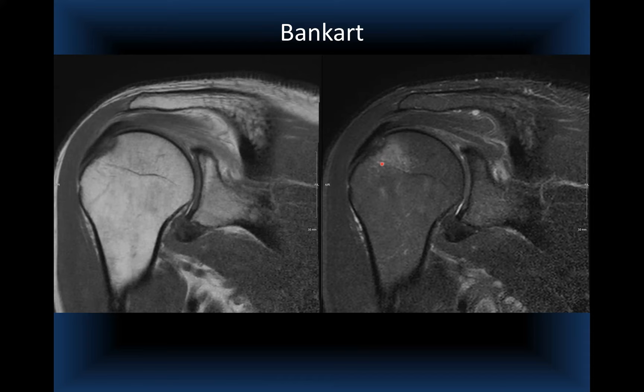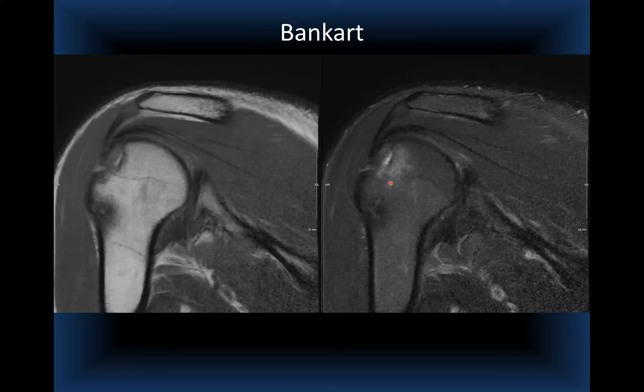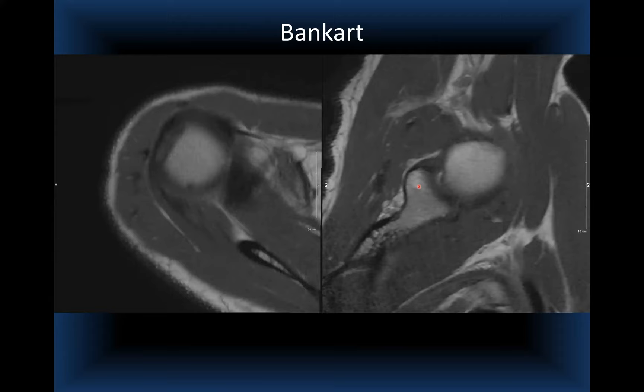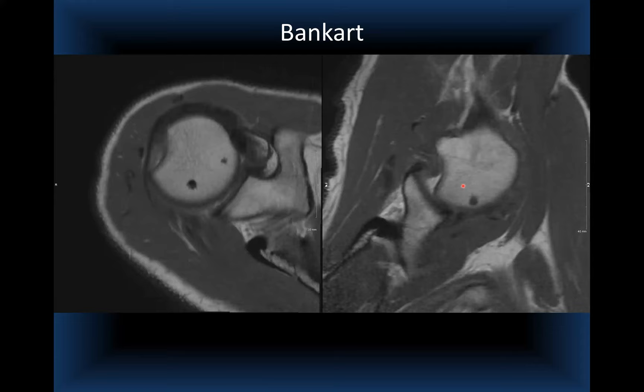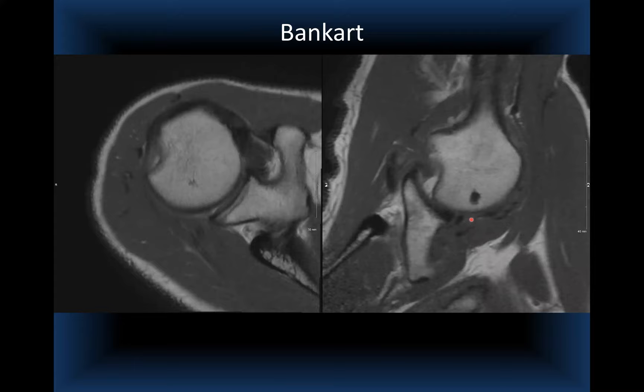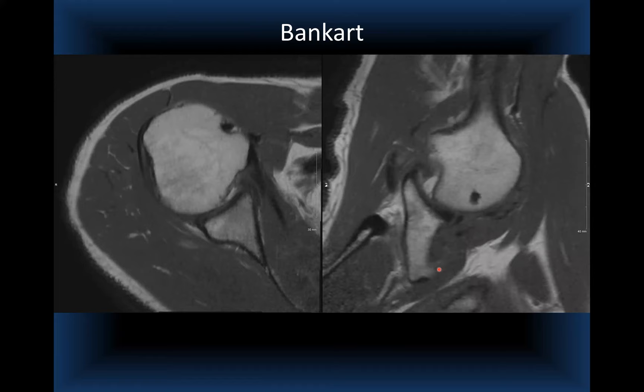Because I was watching the images being acquired, I called the technologist and requested an additional ABER sequence. On ABER, you can see how closely the Hill-Sachs lesion approaches the anterior glenoid — engagement — and the detached labrum and stripped periosteum are visible. This case was diagnosed on both routine orthogonal planes and the provocative ABER sequence, and subsequent CT confirmed a completely detached sleeve of periosteum.